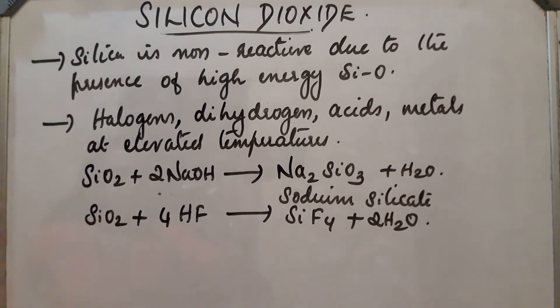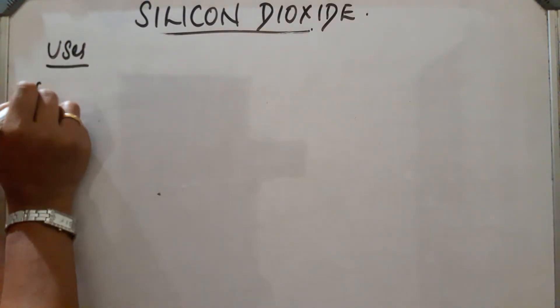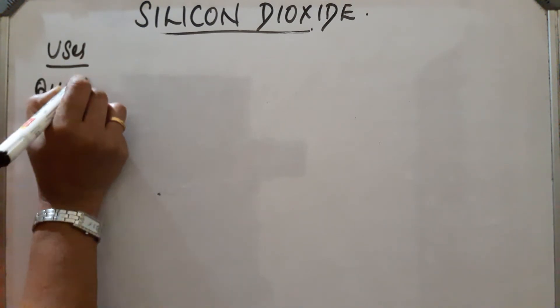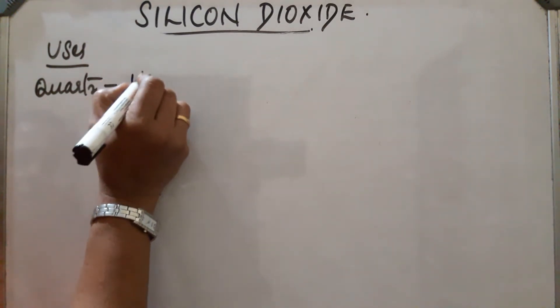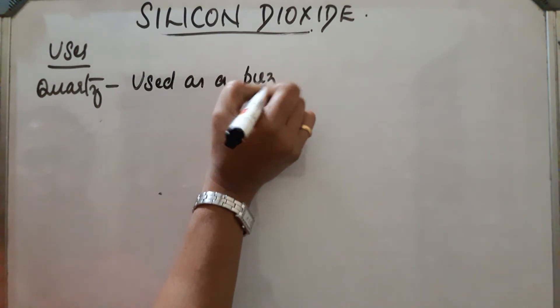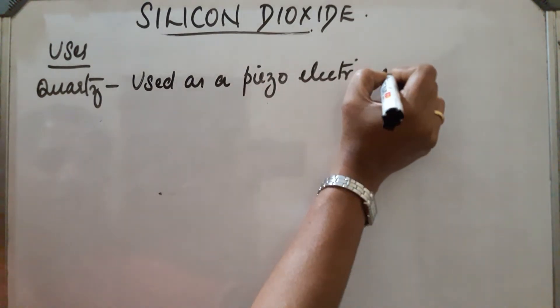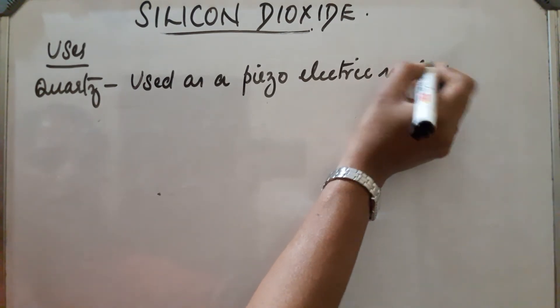Next, uses. First, quartz, one of the crystalline forms of silicon dioxide or silica. It is used as a piezoelectric material. What is meant by piezoelectric material?